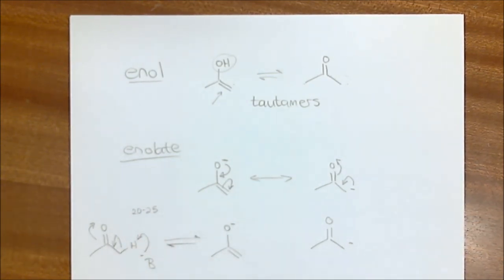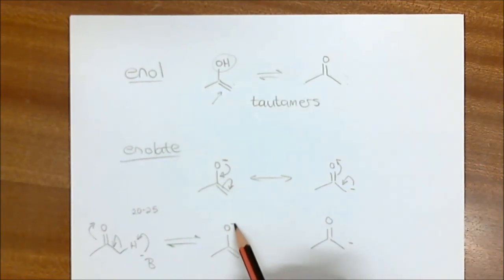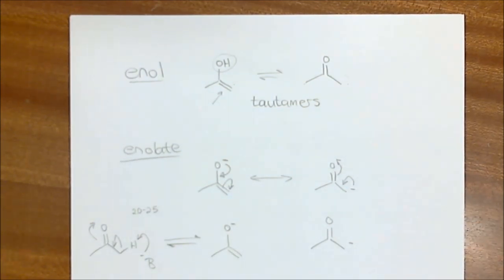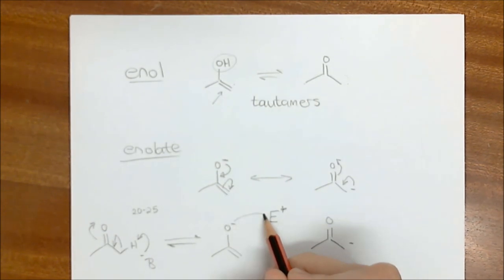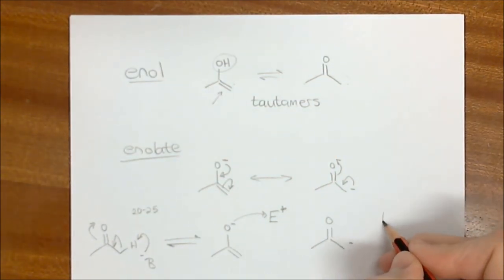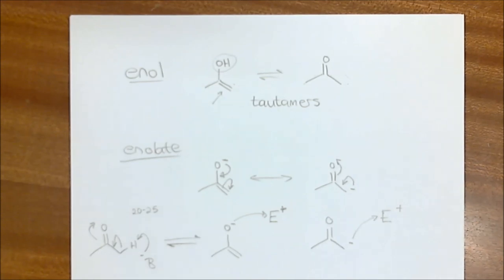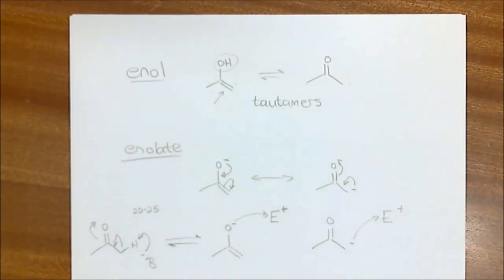Once we understand how we're forming enolates, we can consider that this enolate is a molecule that has a negative charge on an oxygen or a negative charge on a carbon. Whenever we have molecules with negative charges, we can consider them to be nucleophiles. Nucleophiles are able to do reactions — they're able to form new bonds. If we add an appropriate electrophile, the electrophile can react at the oxygen, or the electrophile could add on to the carbon.